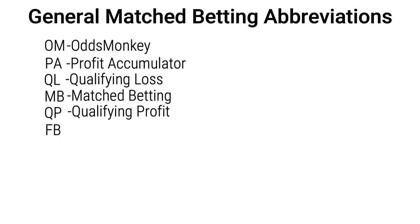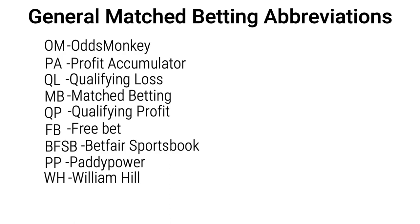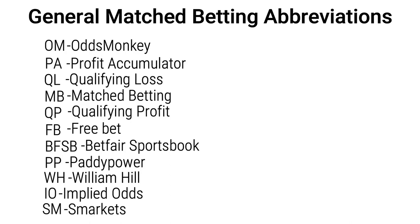Then you have FB which stands for free bet. There's BFSB which is Betfair Sports Book. You also have PP which is Paddy Power. Another bookmaker abbreviation is WH which is William Hill. You also have IO which is Implied Odds. Next up is SM which is Smarkets, the betting exchange.